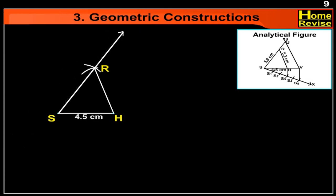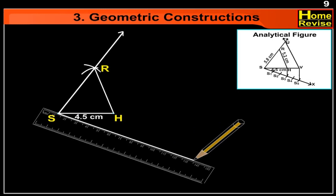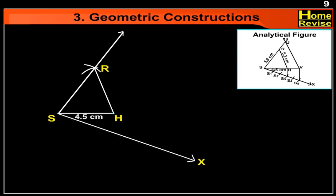Now, let us draw an acute angle, angle VSX. Let us mark 5 points on the ray SX. The number of parts should be greater than 3 and 5, since the ratio is 3 upon 5.